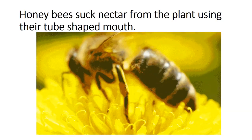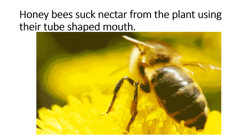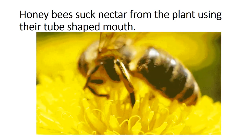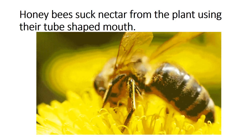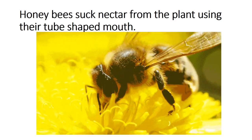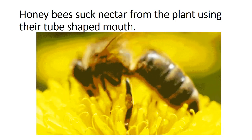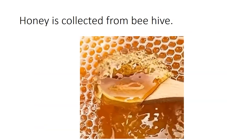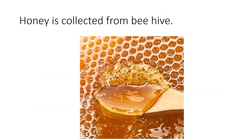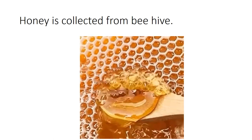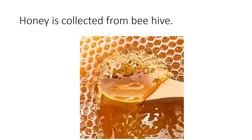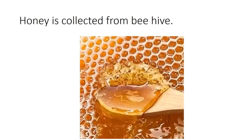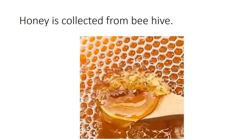Honey bees suck nectar from plants using their tube-shaped mouth. ان کا منہ tube کی طرح بنا ہوتا ہے جس سے یہ پھولوں کا رس چوستی ہیں، جس سے پھر honey یا شہد بنتا ہے۔ Honey is collected from bee hives — یہ honey کو اپنی خوراک کے لیے استعمال کرتے ہیں تاکہ سردیوں میں اس کو استعمال کر سکیں، اور پھر ان کے چھتے سے honey حاصل کی جاتی ہے۔